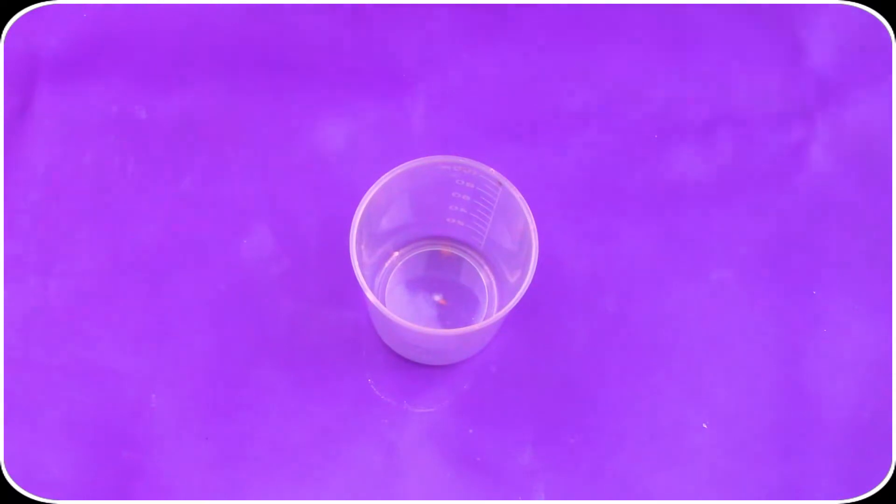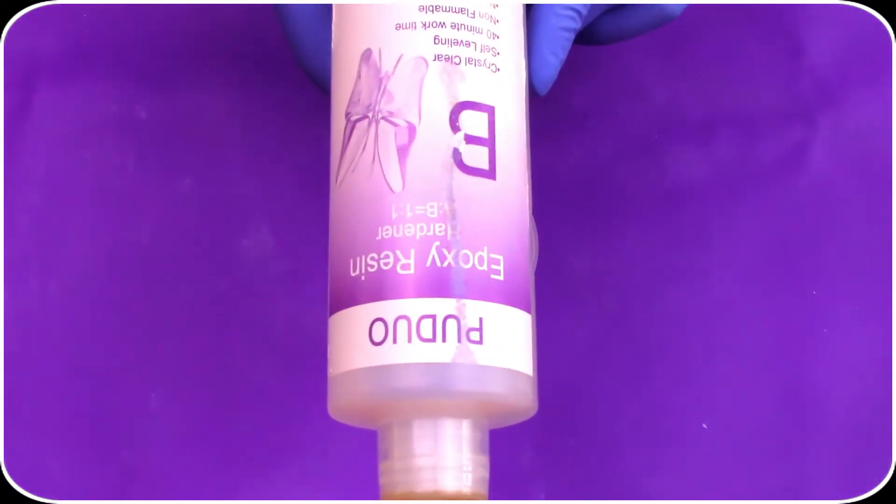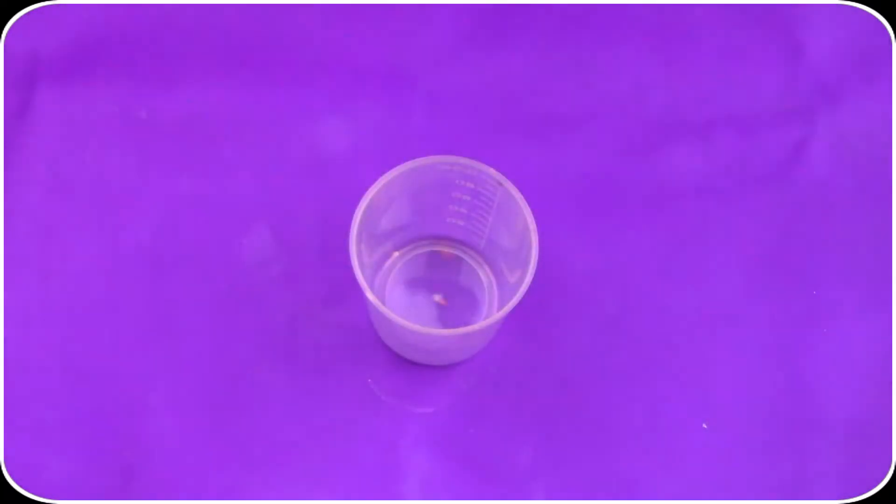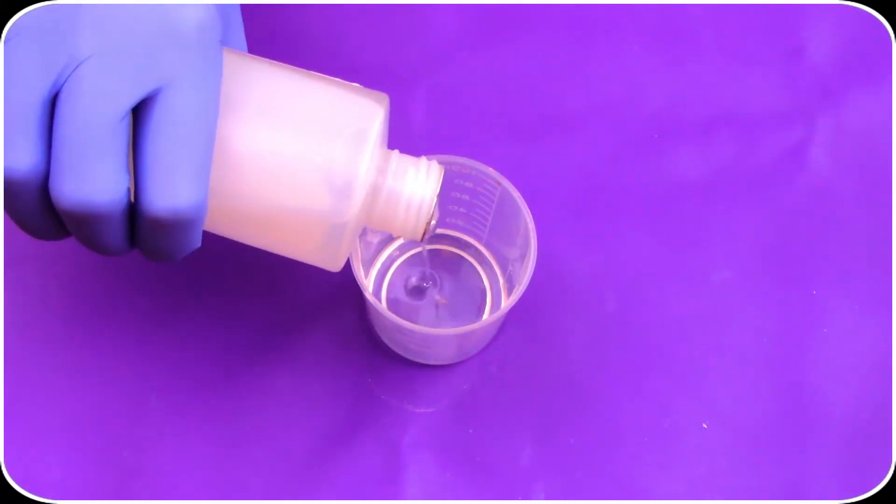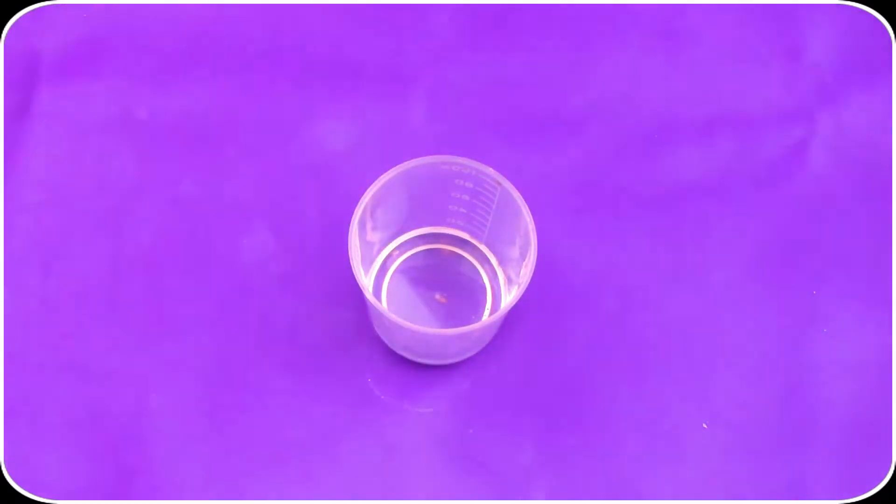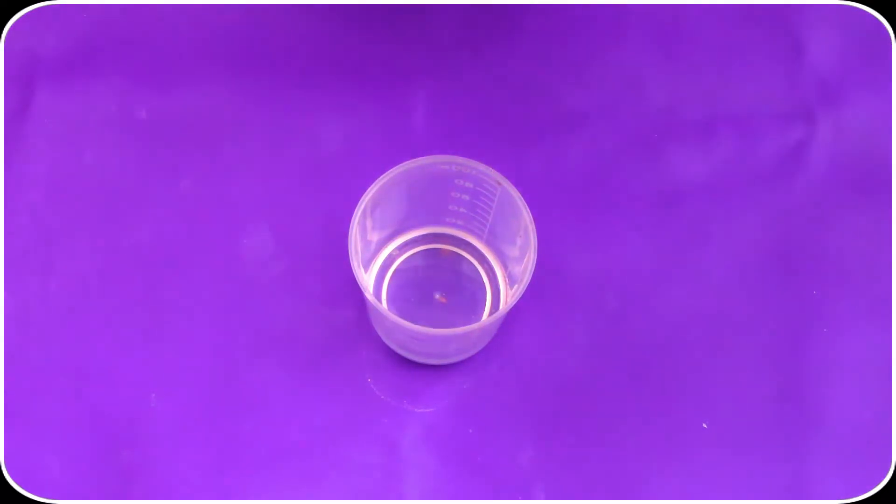The first step is to grab your hardener and pour one part into your mixing container. Now grab your resin this time and pour one equal part into the same mixing container.